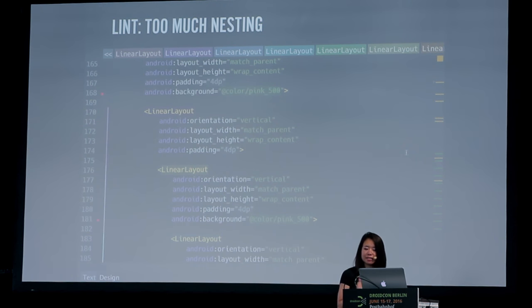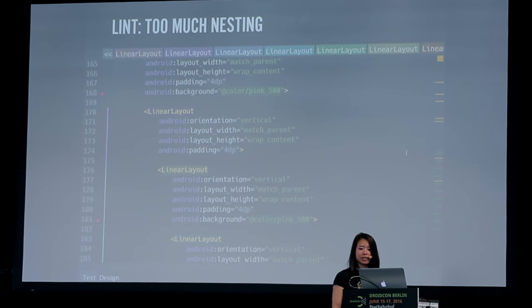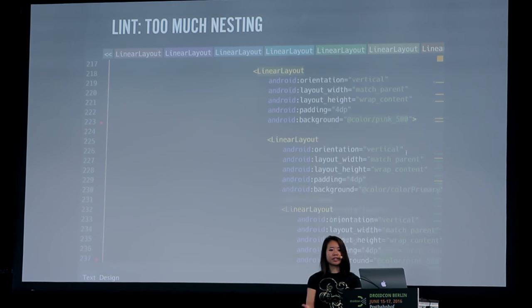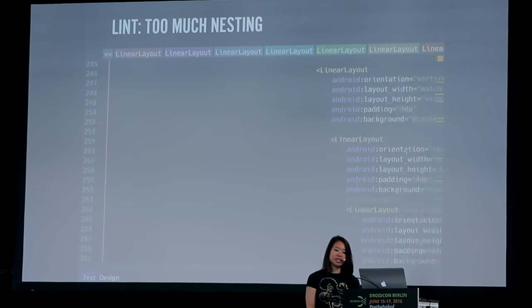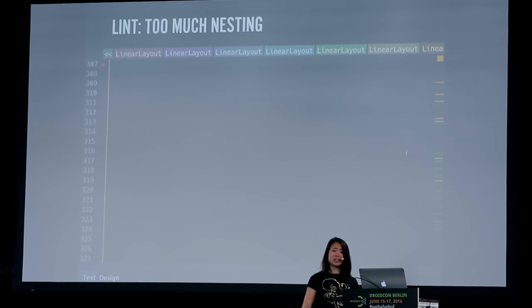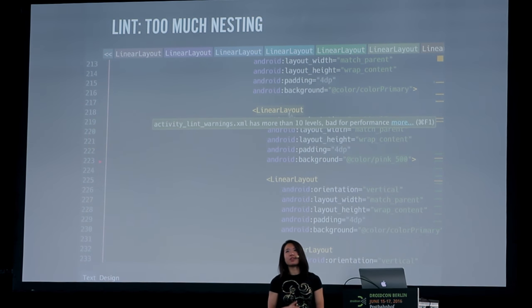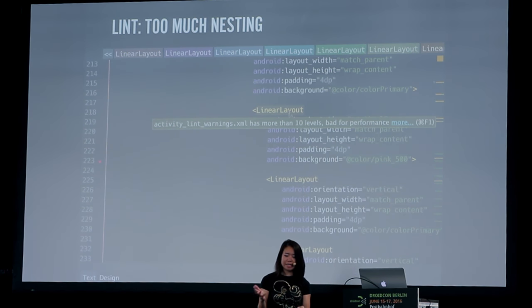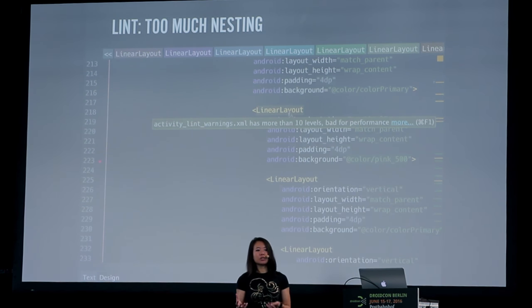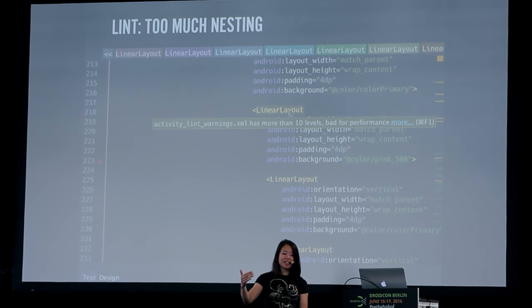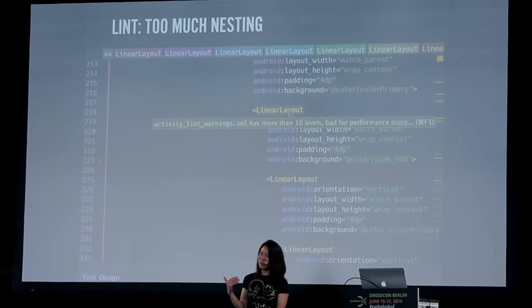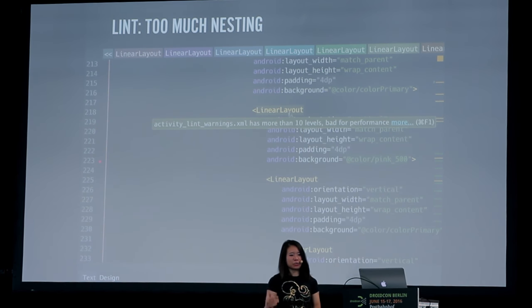Lint also doesn't like it if you nest your hierarchies too much. There's an environment variable called something like Android Max Lint Depth, and by default it's probably 10. So if you nest any of your layouts deeper than 10 levels, Lint will warn you. And it's probably something you should fix — if you find yourself nesting past 10 levels, you should consider refactoring your layout.